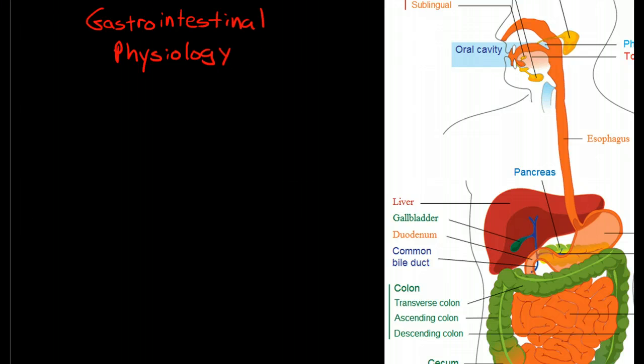So the gastrointestinal system includes the GI tract, which is a tube that goes from mouth to anus, and then organs that are also involved with the GI system, including the liver and the pancreas tucked back behind here.